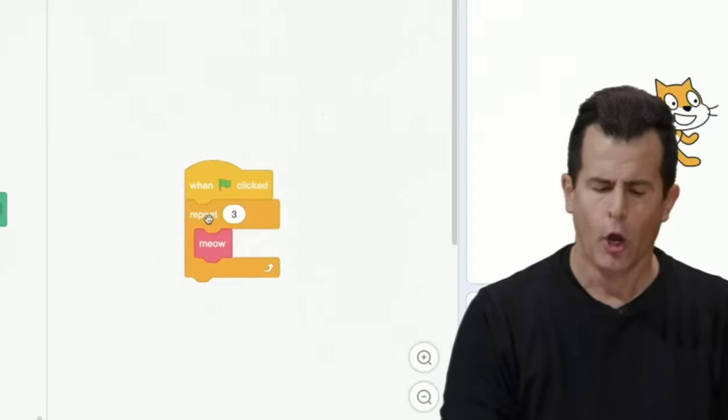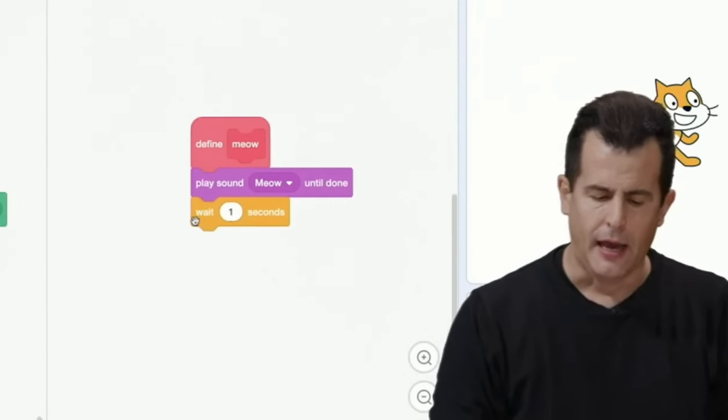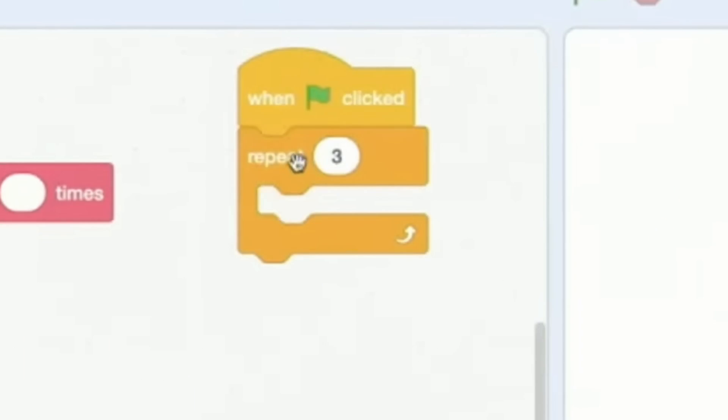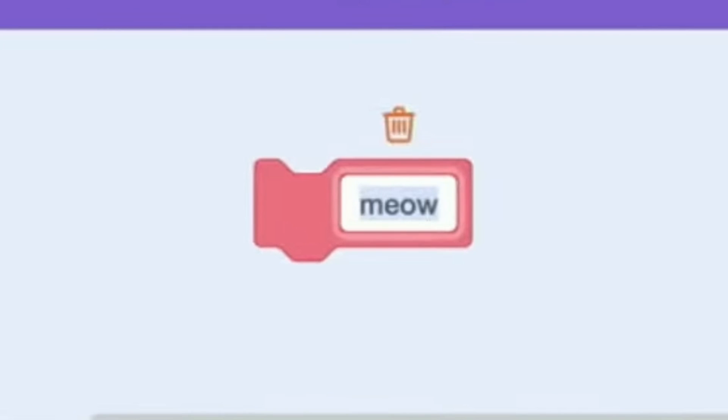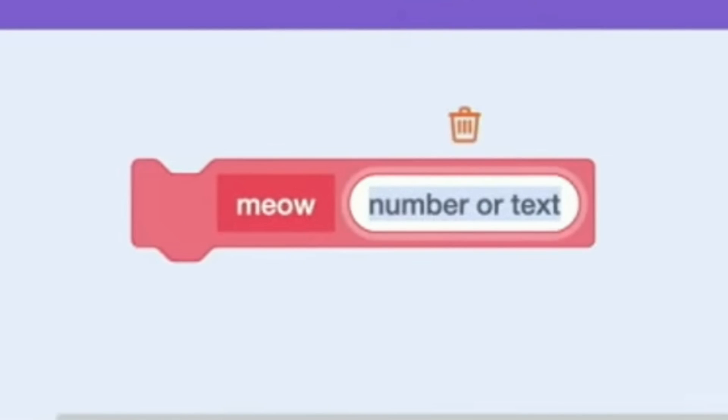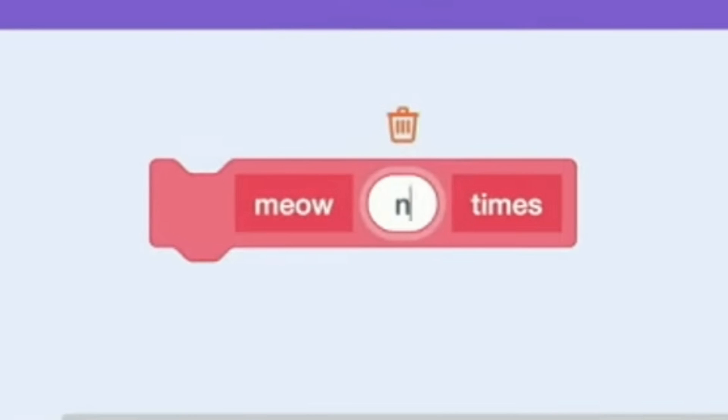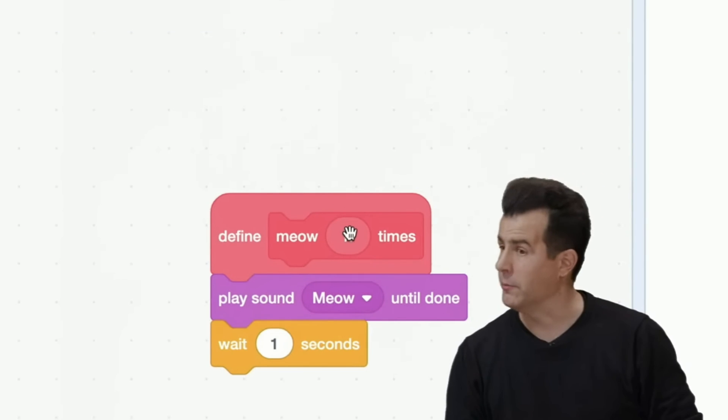Now, taking it one step further, Professor Malan refines the cat's meowing code once again. He eliminates the loop and adds something called a number input to the custom block, representing a stand-in value that you can set whenever you use your custom block.